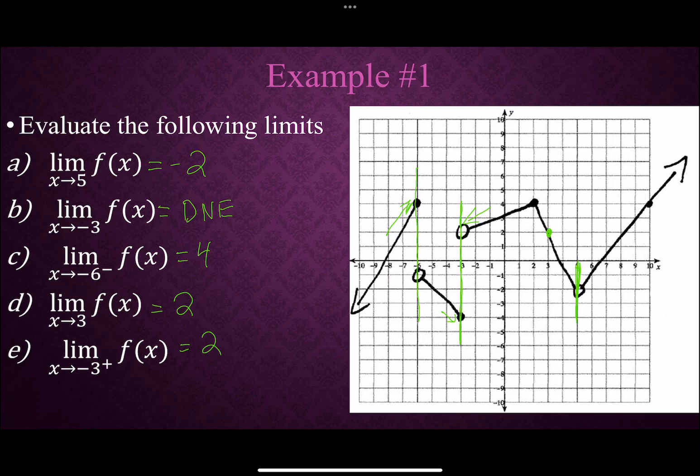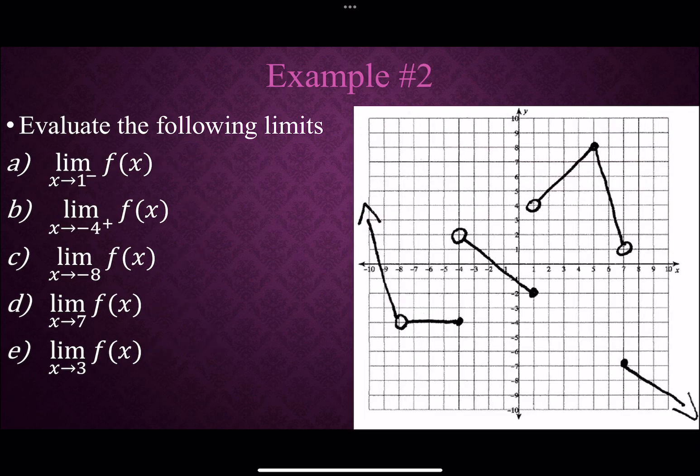So we're going to do another graph to give you an idea of how this is going. It might not be a bad idea if you pause, figure out your answers right here on your own, and then compare it to what I'm going to talk about in a second. So we have x approaches 1 from the left side. So 1 is right here. Left side of that would be approaching here, which would be the location of negative 2. It doesn't matter that the right side is different, because we're only caring about the left side limit.